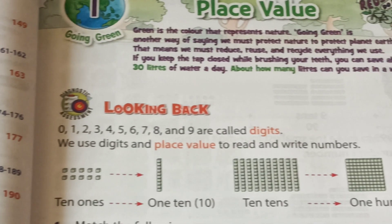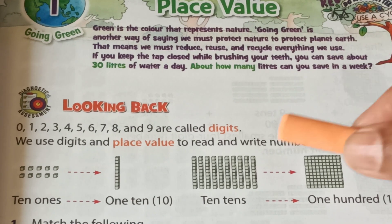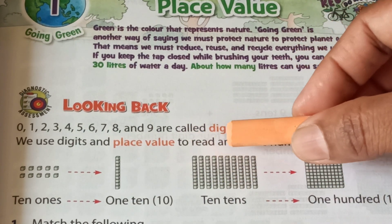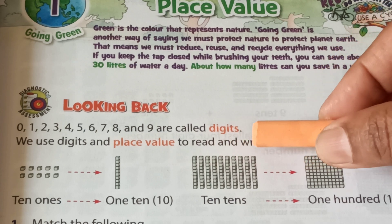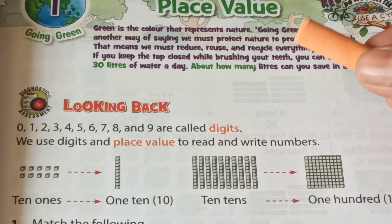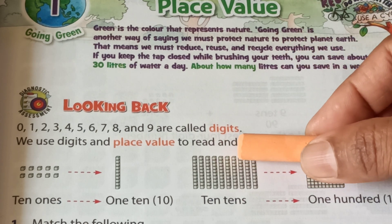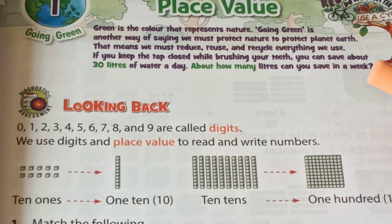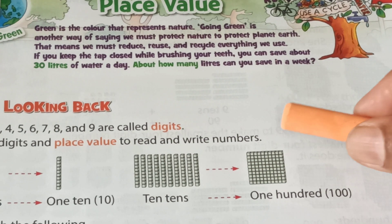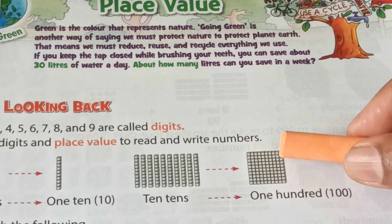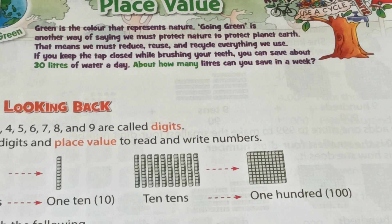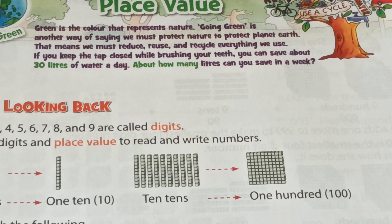Then see here — how many tens? 1, 2, 3, 4, 5, 6, 7, 8, 9, 10. When we tie together 10 tens, we get 100. We already learned this in our previous class, in second standard.